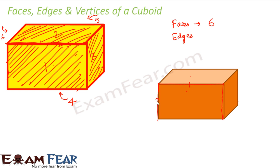How many edges are there? Counting them: 1, 2, 3, 4, 5, 6, 7, 8, 9 — so there are 9 edges or 9 sides which are visible to us from the front view. But does that mean there are only 9 edges? There could be certain edges which are not visible to us — just like with faces, we could see only 3 faces but there were 3 more faces placed behind. So the same thing can happen for edges as well.